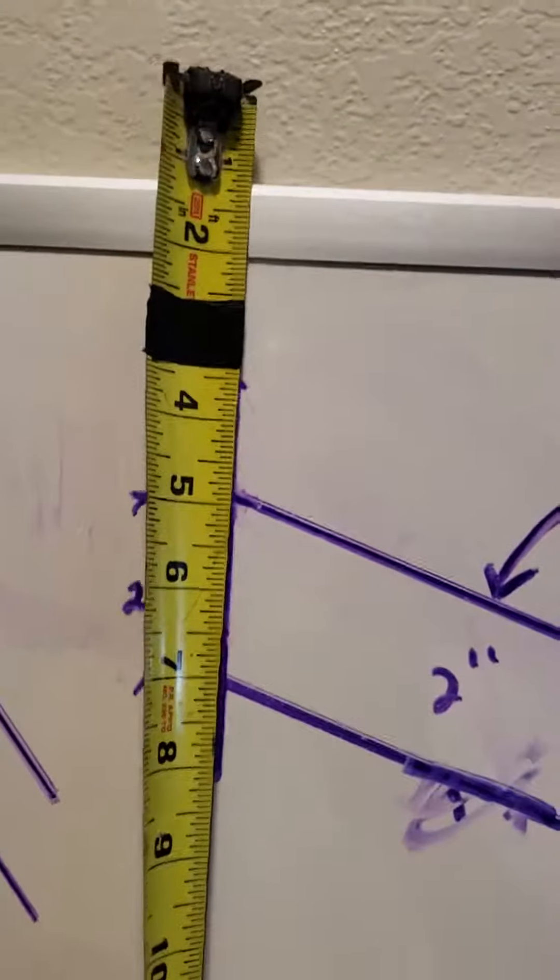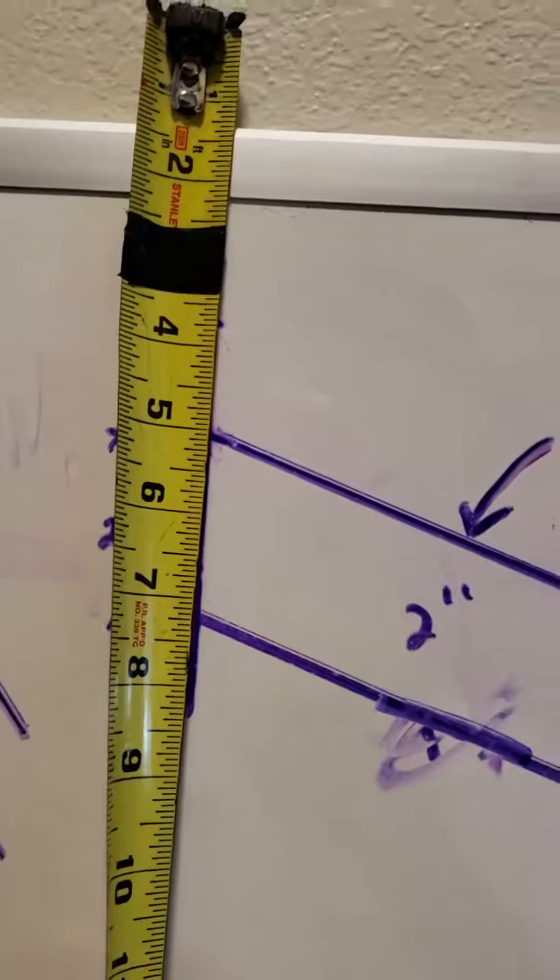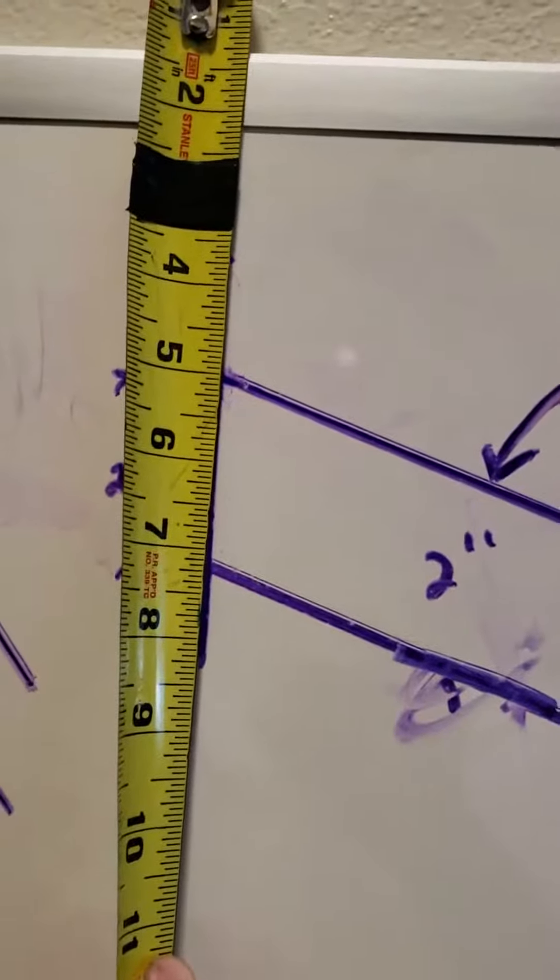But when you measure the vertical, for your framing number, you're getting almost an inch and a quarter. Or sorry, 2 and a quarter.